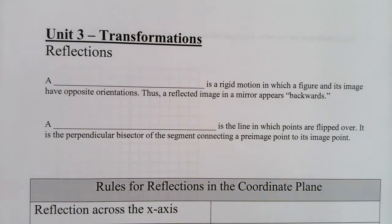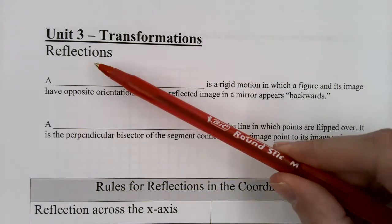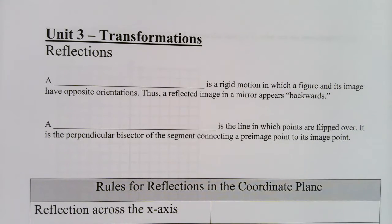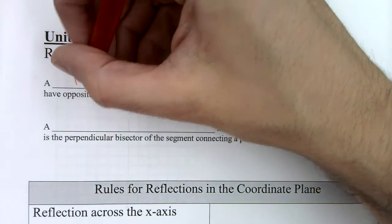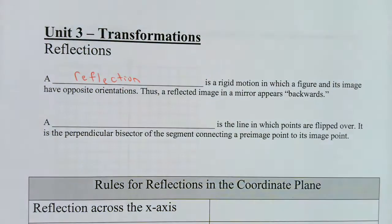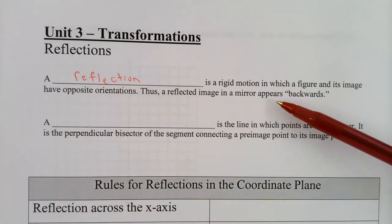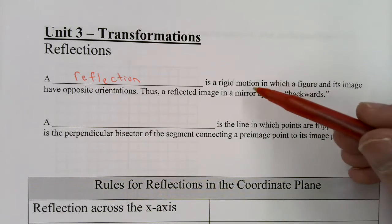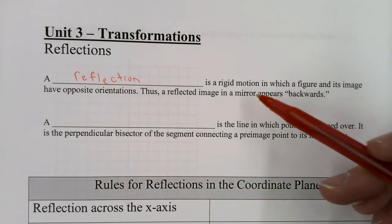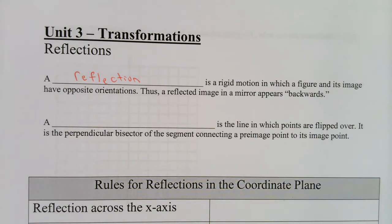This is Unit 3 Lesson 2: Reflections. Yesterday we did translations — that was the first type of transformation. Now this is the second type: reflections. A reflection is a rigid motion in which a figure and its image have opposite orientation. A reflected image in a mirror appears backwards. It's a rigid motion, which means the pre-image and image are the same shape and size — they are congruent, just like translations.